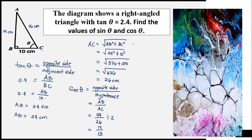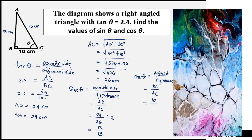Next is cosine theta. Cosine theta equals the adjacent side divided by the hypotenuse. The adjacent side is line BC and the hypotenuse is line AC. BC has a measurement of 10 and AC has a measurement of 26. Reducing to lowest form by dividing by 2: 10 divided by 2 is 5, and 26 divided by 2 is 13.